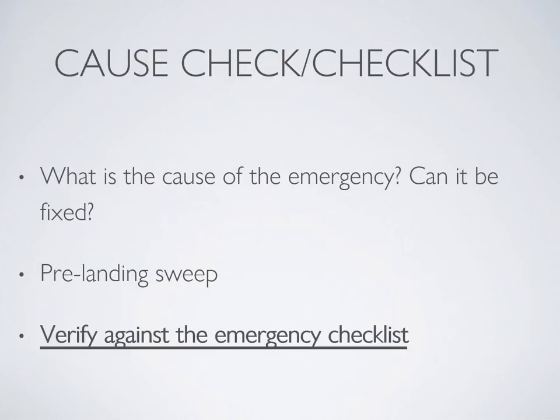Next is the cause check. This could be similar to the sweep you do as your pre-landing check or your safety check before upper air work. Check all instruments, make sure nothing looks out of order, and try to restart the engine. You can also verify against the emergency checklist to make sure you didn't miss any steps — highly recommended, because they'll be looking for that on your flight test.